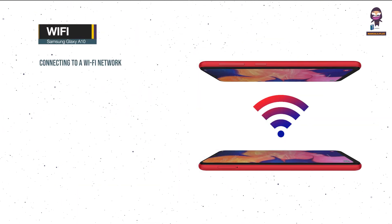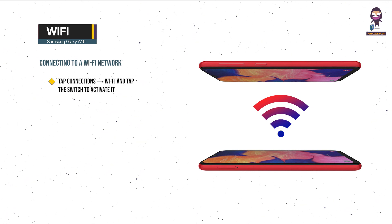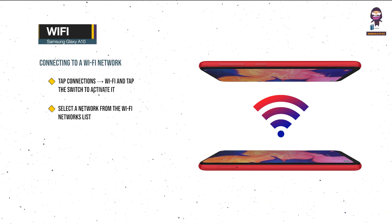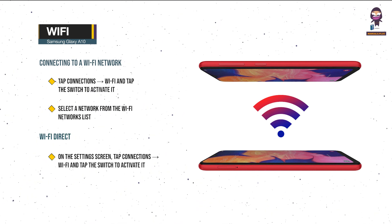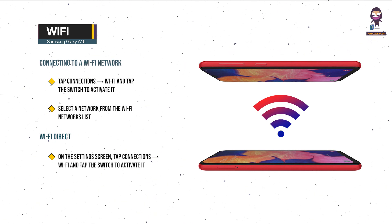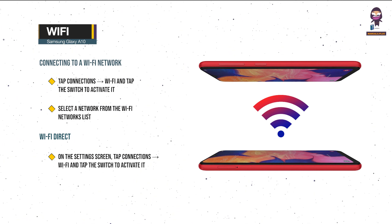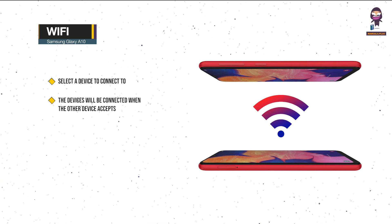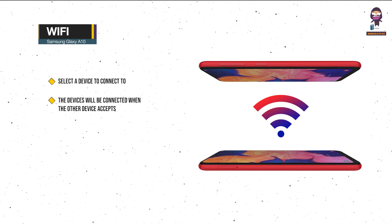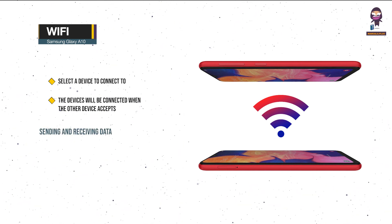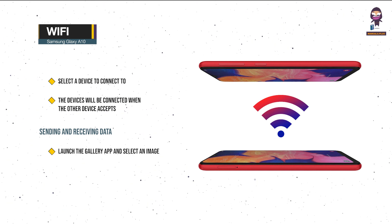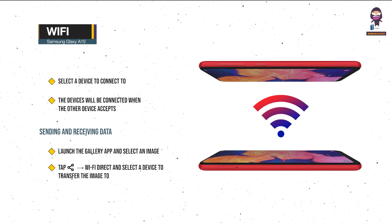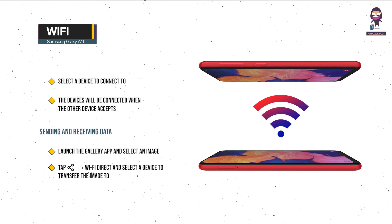Wi-Fi — Connecting to a Wi-Fi Network: on the Settings screen, tap Connections, Wi-Fi, and tap the switch to activate it. Select a network from the Wi-Fi Networks list. Wi-Fi Direct: on the Settings screen, tap Connections, Wi-Fi, and tap the switch to activate it, then tap Wi-Fi Direct. The detected devices are listed — select a device to connect to. The devices will be connected when the other device accepts the Wi-Fi Direct connection request. To send and receive data, launch the Gallery app and select an image, tap Wi-Fi Direct and select a device to transfer the image to, then accept the Wi-Fi Direct connection request on the other device.